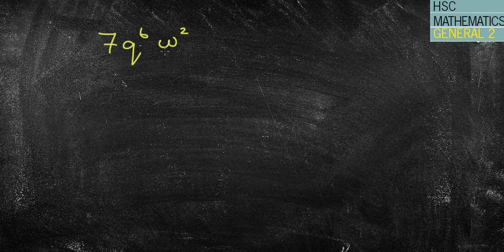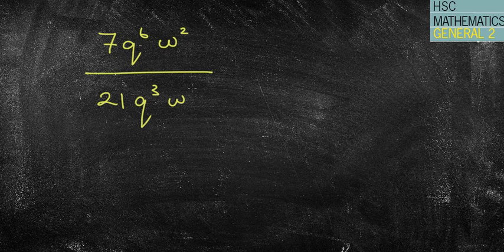The last example I want to go through, I see this question a fair bit. They might have something like this. 7, q to the power of 6, w squared, all over 21, q to the power of 3, w8.